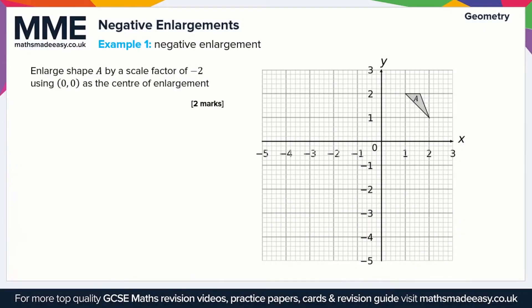Welcome to the Maths Made Easy tutorial on negative enlargements. There's only one skill to go over in this video. We're going to start by looking at an example question where we have to enlarge shape A by a scale factor of minus two, using zero zero — the origin — as the center of enlargement. With regular enlargements, we draw lines from the center to the shape and go beyond. With negative enlargements, we go the other way.